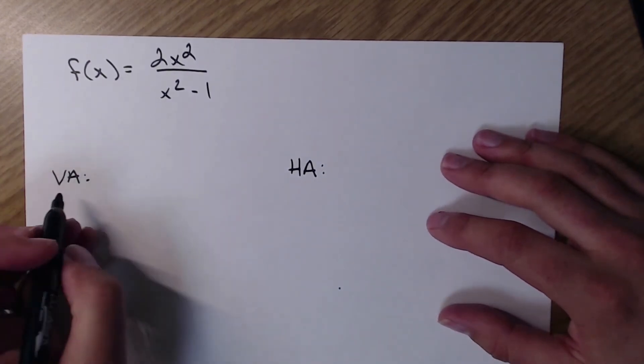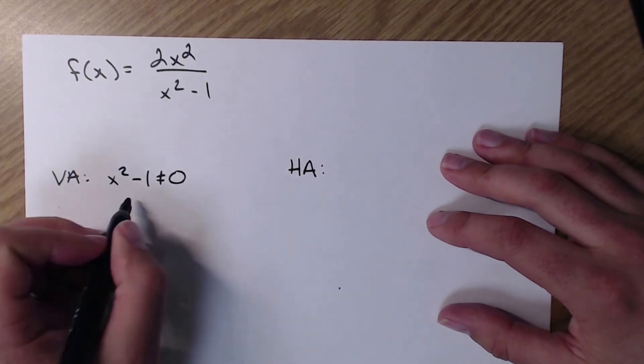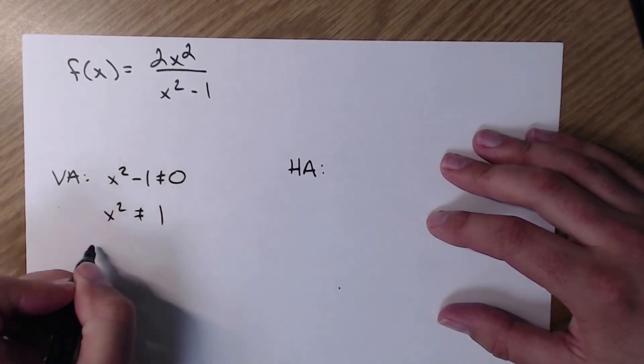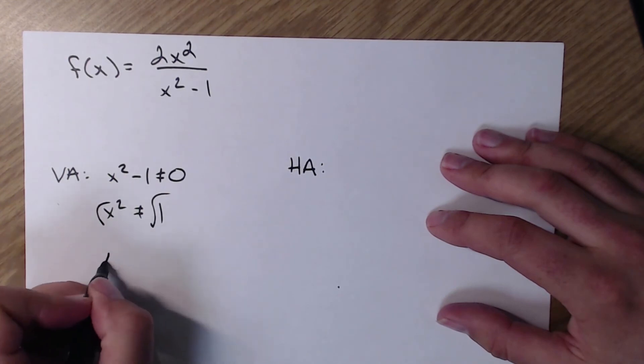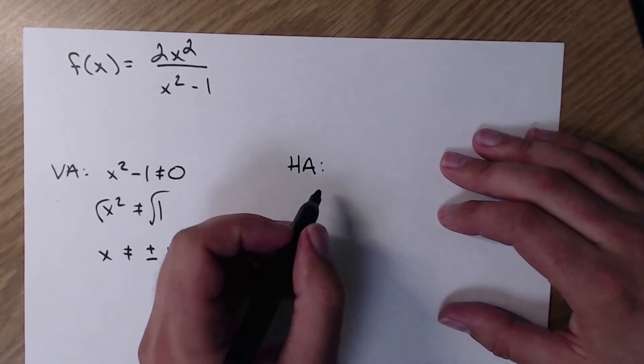Now I'm here. Vertical asymptotes. Set my denominator not equal to 0, sorry. x squared can't be 1. Square root both sides. x cannot be plus or minus 1.